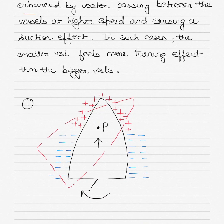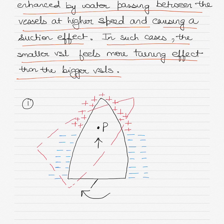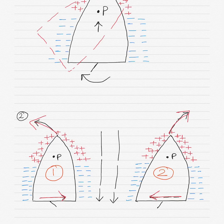This may be further enhanced by water passing between the vessels at higher speed, causing a suction effect. In such cases, the smaller vessel feels more turning effect than the bigger vessel. As shown in diagram 2, in the overtaking situation where vessel 2 is overtaking vessel 1 in a narrow channel, due to water passing at high speed along the hull, the bows are repelled from one another while the sterns are attracted to one another, which can cause a collision of the sterns.